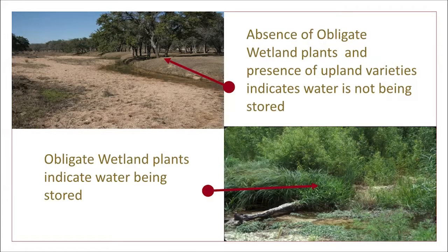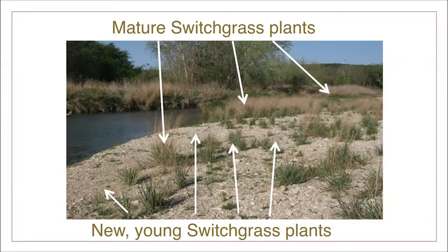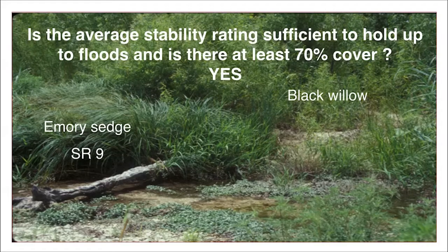Riparian health and function can be assessed by knowing and understanding the breadth of riparian vegetation. In this photo, new plant recruitment can be seen in the growth of watercress and frog fruit, both colonizers. Some new, young grass plants can be found further up on the bank, too. Recruitment and multiple age classes can be seen more clearly in this photograph of young and mature switchgrass plants. Here, 70% of the bank appears to be covered with stabilizing vegetation, like Emory Sedge, which has a stability rating of 9, and Black Willow, which is rated as a 7.